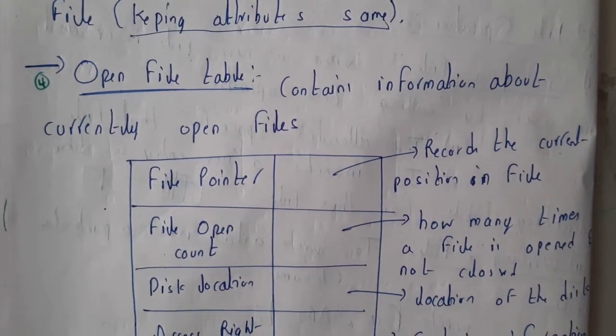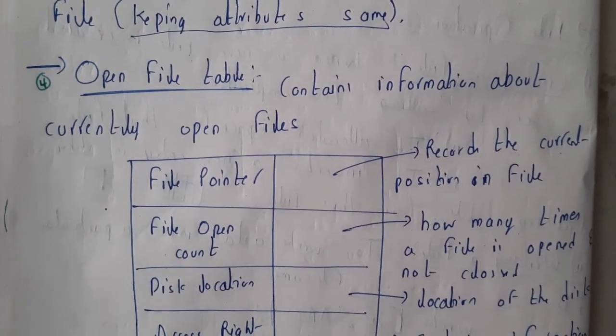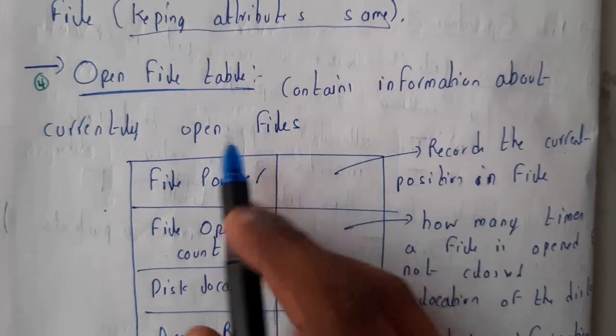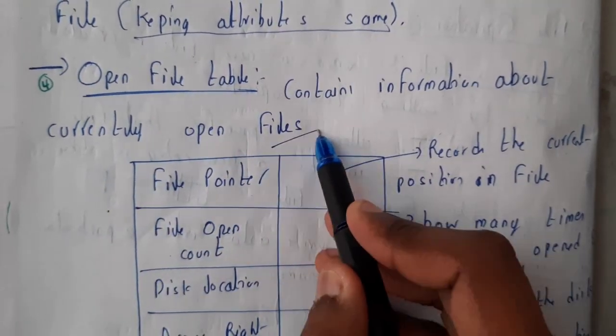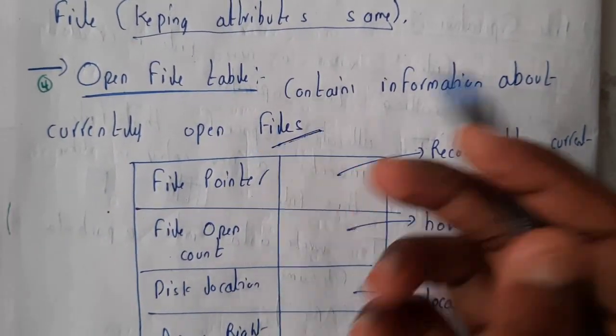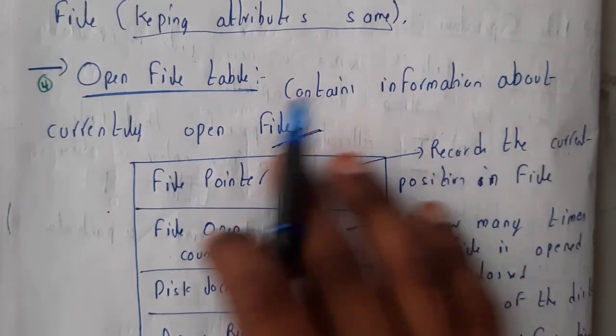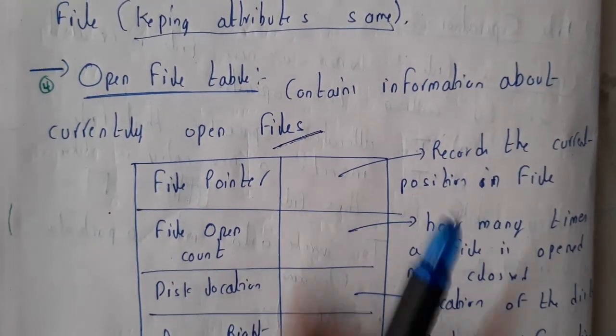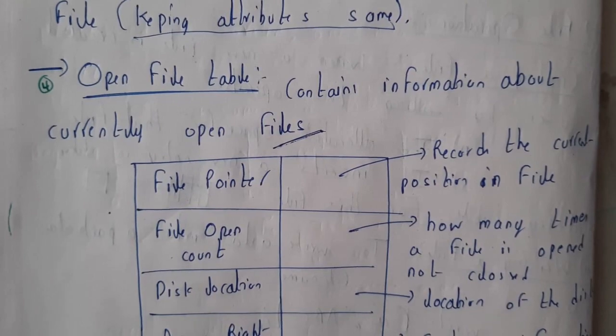Hello guys, we are back to the next tutorial. In this tutorial, let us go through open file table. It contains the information about currently open files. We've gone through attributes, right? So these are nothing but a few attributes which are stored in the form of a table, which is called the open file table.